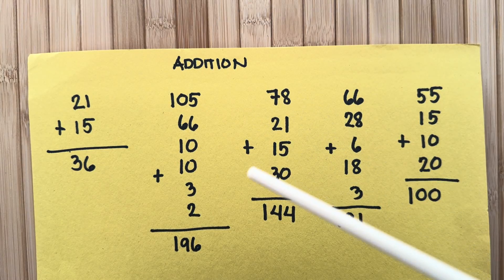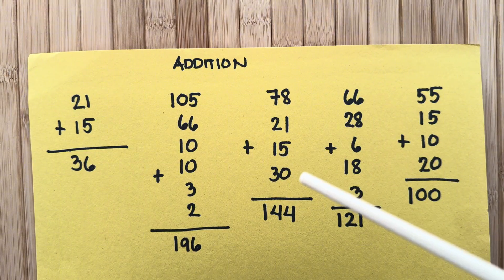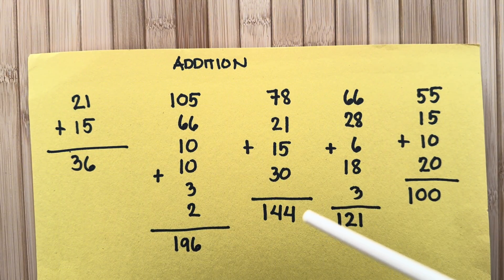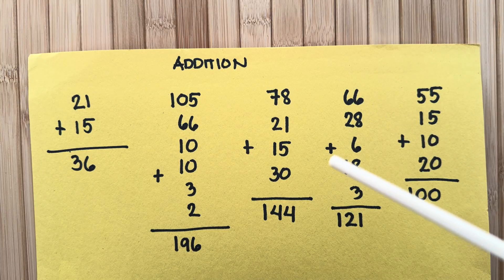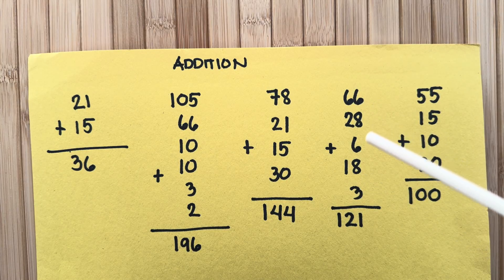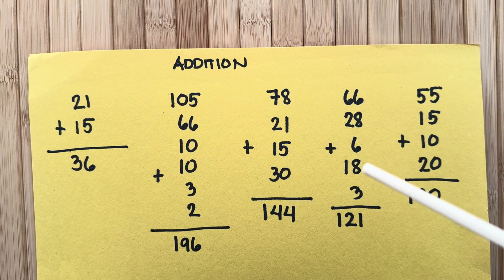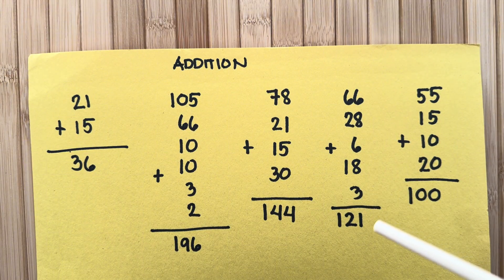78 plus 21 plus 15 plus 30 is equals to 144. 66 plus 28 plus 6 plus 18 plus 3 is equals to 121.